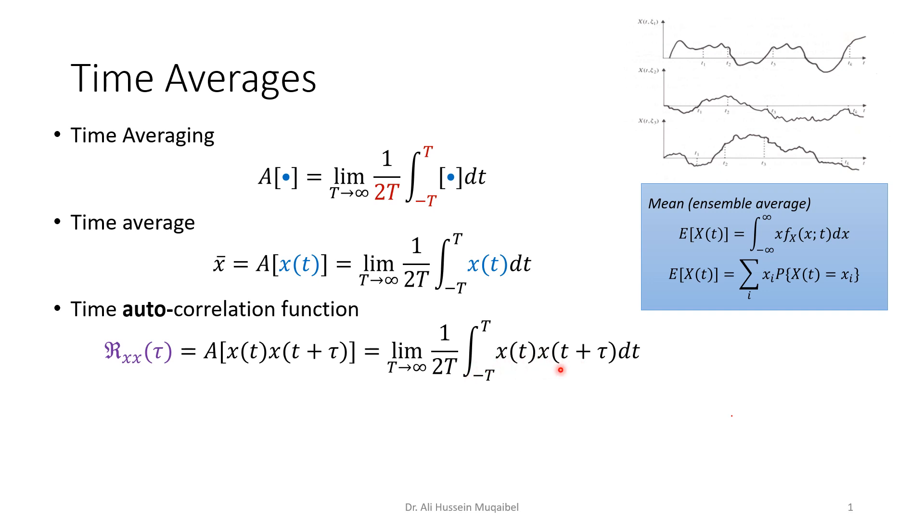This is called the time average, and if you notice here, we're using script R instead of the R_xx we use for auto-correlation. We can also do the same for the case of cross-correlation. The time cross-correlation: we have now two different samples from two different random processes x and y. We have small x and small y, and then we correlate them over time. Remember, we have script R_xy, the cross-correlation between x and y.